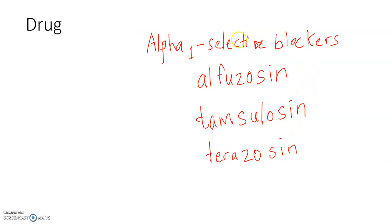These alpha-1 blockers can be used to relax smooth muscle in benign prostatic hyperplasia (BPH). In BPH, you have enlargement of the prostate gland. What you want to do is relax the smooth muscle so that you can increase the urinary flow rate and improve the obstructive symptoms.